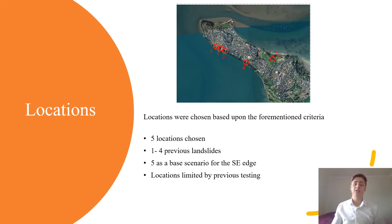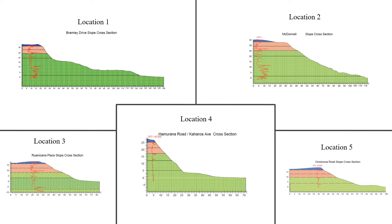Locations were chosen based upon the aforementioned criteria. Five locations were chosen in total. Locations one to four were previous landslides which had occurred along the northwestern edge of the peninsula. Location five was used as a base scenario for the southeastern edge. These locations were limited by previous testing due to a lack of recent development towards the tip of the peninsula. Cross sections have been developed for each of the chosen locations. Notable locations include location one, the Bramley Drive failure, and location two, the McDonnell Road failure — both significant, well-documented cases of slope instability on the Amokarau Peninsula.